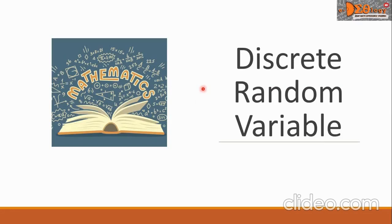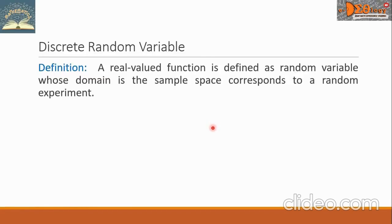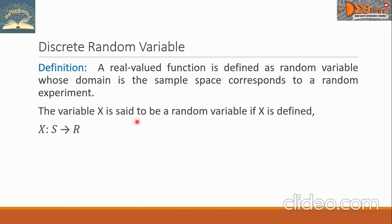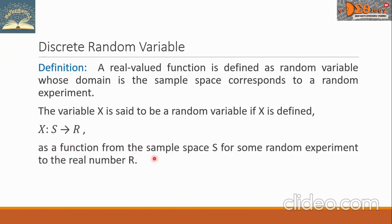Hi everyone, today we're going to study discrete random variables. By definition, a real-valued function is defined as a random variable whose domain is the sample space corresponding to a random experiment. The variable X is said to be a random variable if X is defined as a function from the sample space S to the real numbers R.